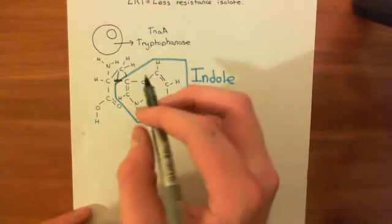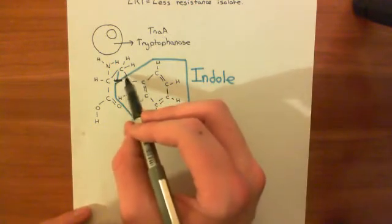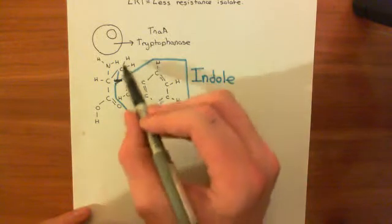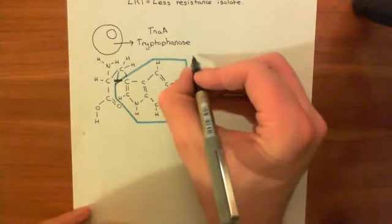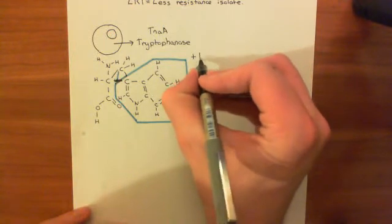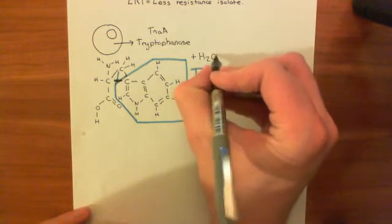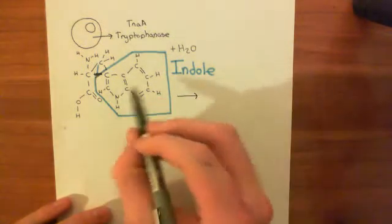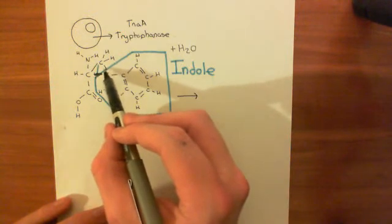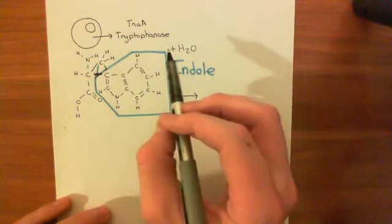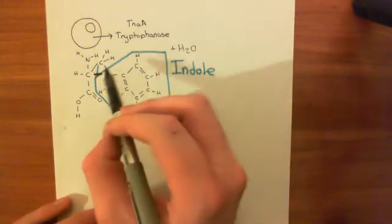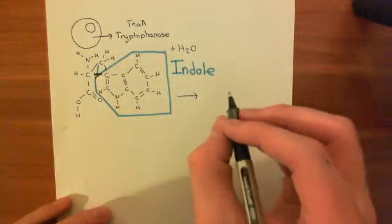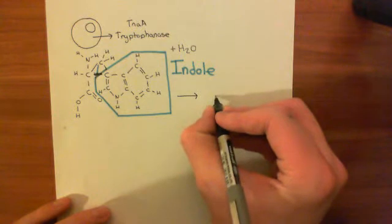Now, tryptophanase is basically going to cleave this bond here between the indole ring of tryptophan and the rest of the amino acid structure. And to do that, it's going to use water. So it's going to bring in water, and this is the reaction it's now going to catalyze. So the first bit is easy. It's going to basically cleave this bond between the methylene group and the indole group. And it's going to use one of the hydrogens from the water to bond to this carbon here of the indole ring and create you a pure indole ring. So let's draw that out.